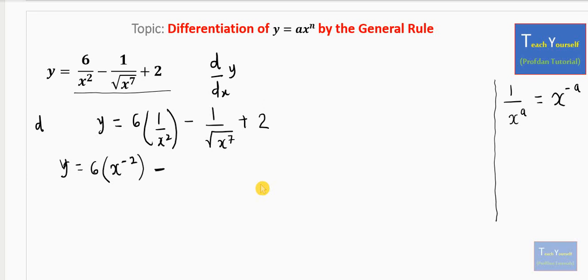Also remember in mathematics, when you have root of x, it's the same thing as x raised to power 1 over 2. So if you have root of x^a, that means this is going to give you x raised to power a over 2. So if we apply that here, we can have 1 over x^(7/2) plus 2. And finally, our y is 6x^(-2) - x^(-7/2) + 2.